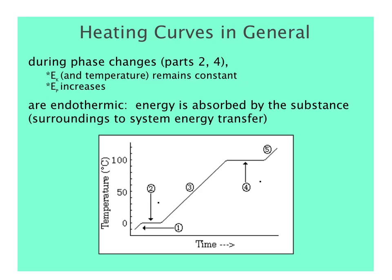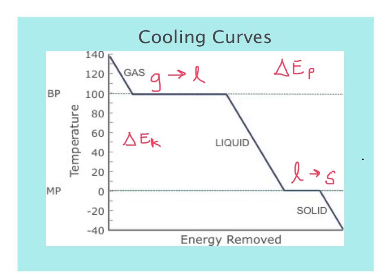Cooling curves are the opposite of heating curves, but also have five segments. In the first segment, a gas is being cooled, showing a decrease in temperature and kinetic energy. Then the gas turns into a liquid — condensation — with no change in temperature. Next, the liquid cools with a decrease in temperature, followed by freezing where the liquid turns into a solid with no temperature change, as potential energy changes instead of kinetic. Finally, the solid cools.